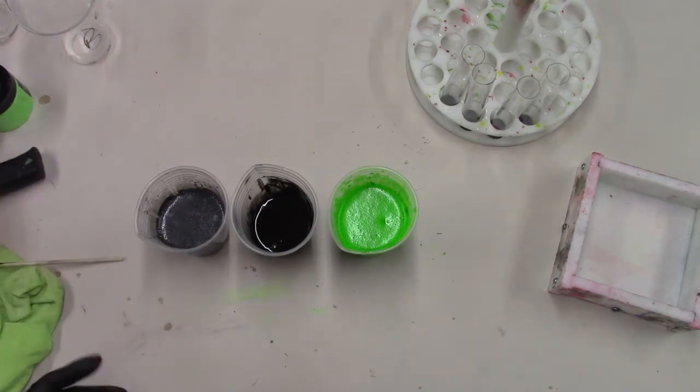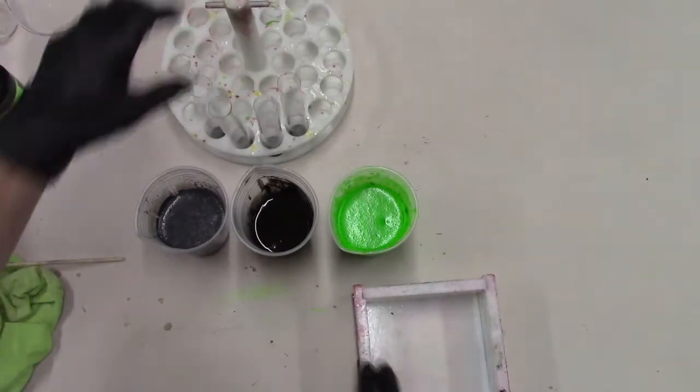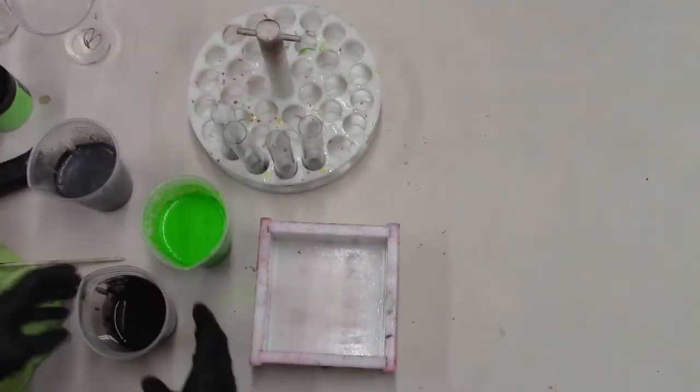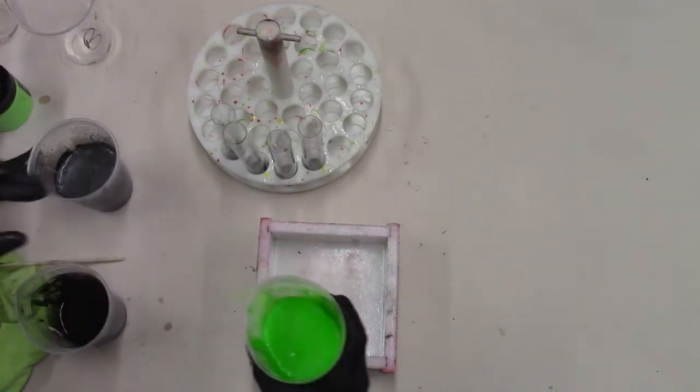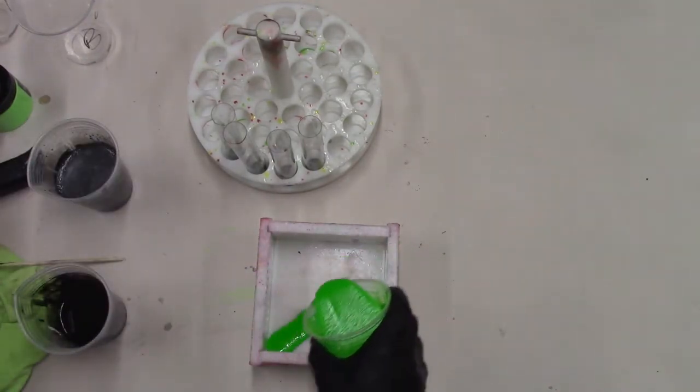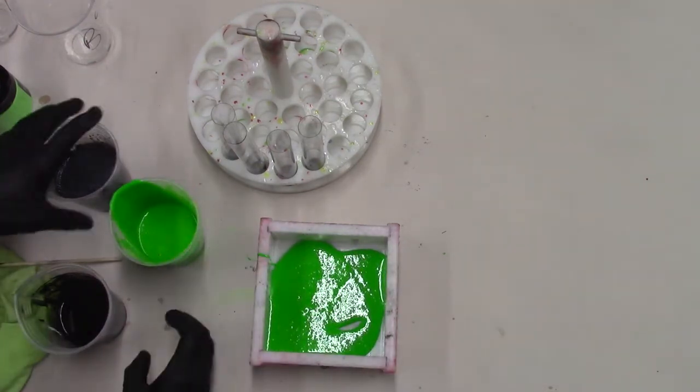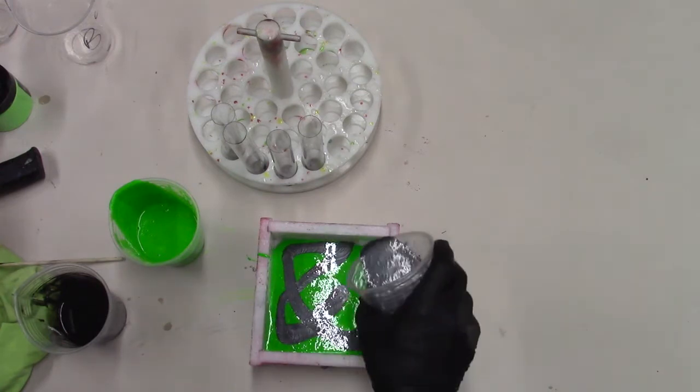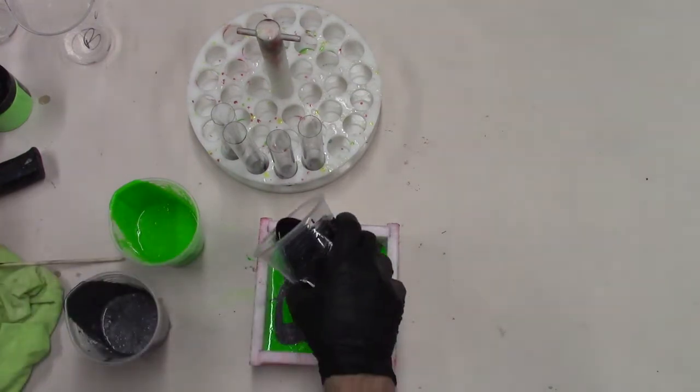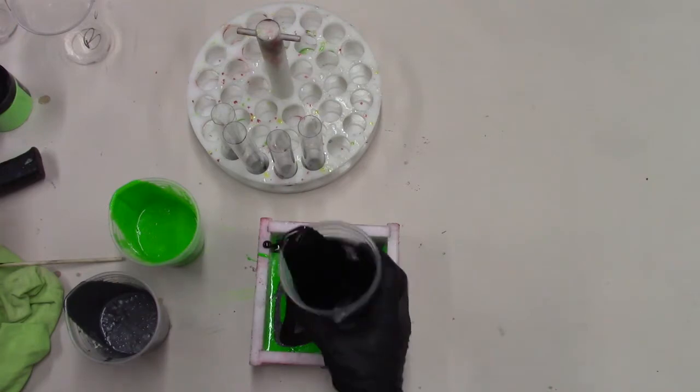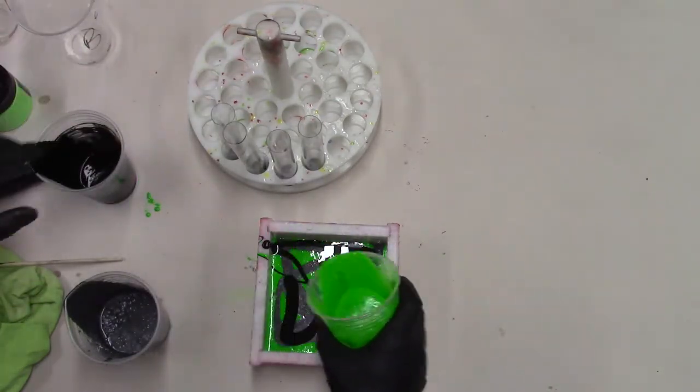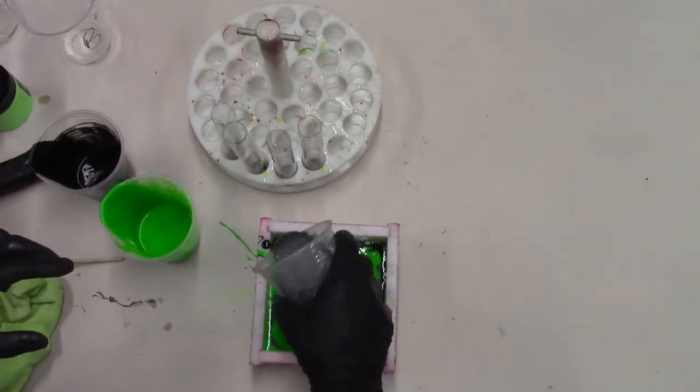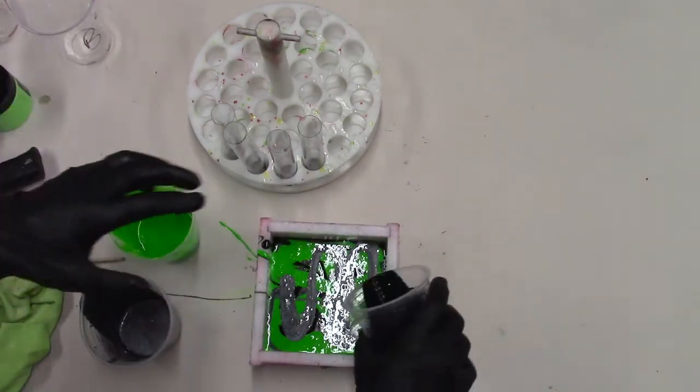Alright, we're right at about 110, 112 degrees, right where we want to be to get good color separation. Now we're going to get these ready and start our pour. I'm going to pour these in different directions every time because I don't want the same characteristic throughout the blank. I want to make sure that I'm getting good color coverage.